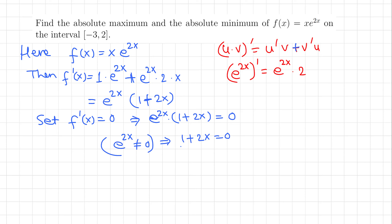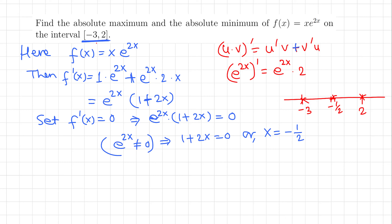From 1 + 2x = 0, subtract 1 from both sides and divide by 2, giving x = -1/2. This is the critical number. It has to be inside the given interval [-3, 2] to be considered. Since -1/2 is between -3 and 2, it is inside the interval. Now to find the absolute max and min, we evaluate the function at the two endpoints and at the critical number.